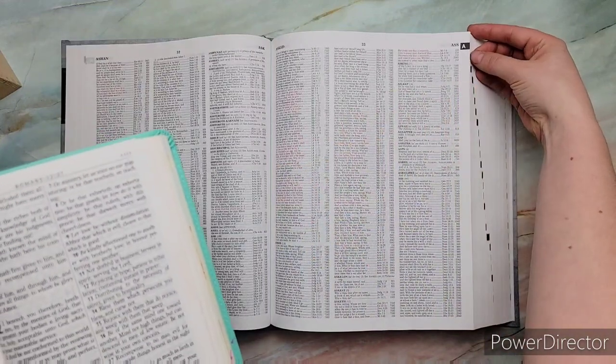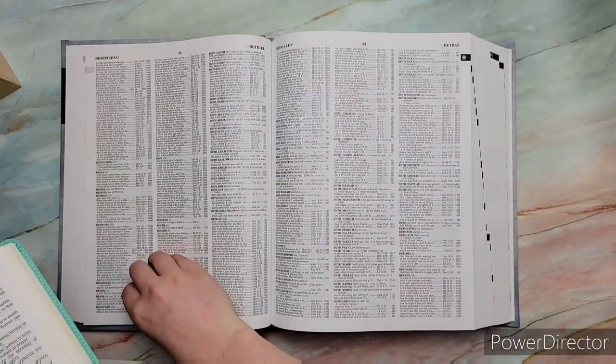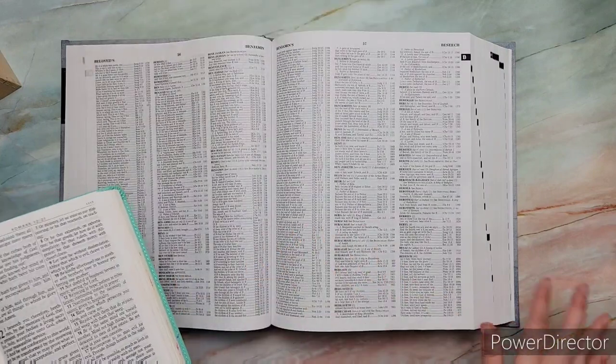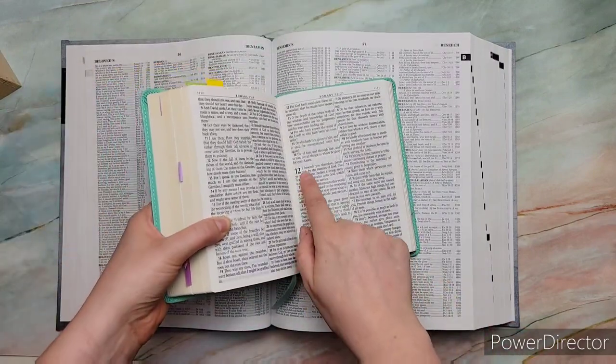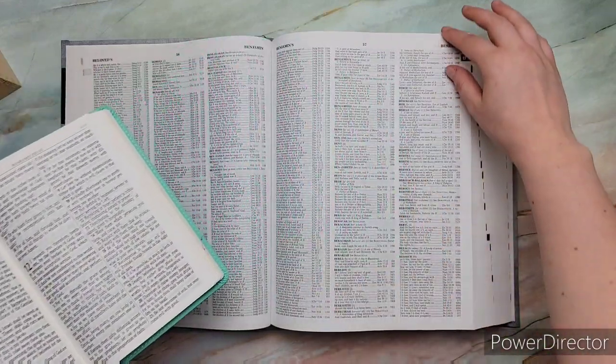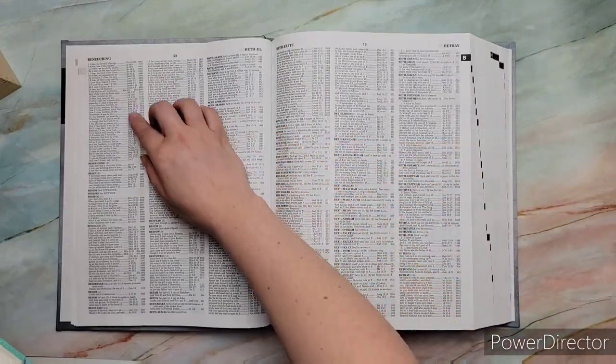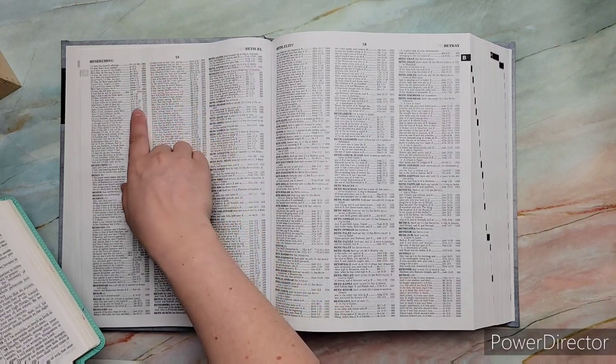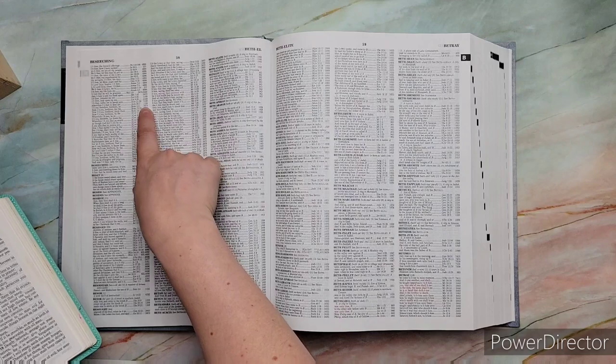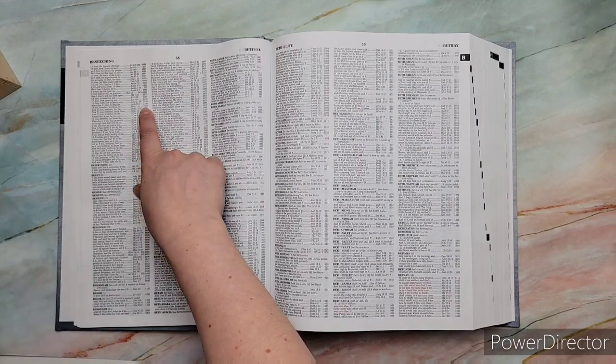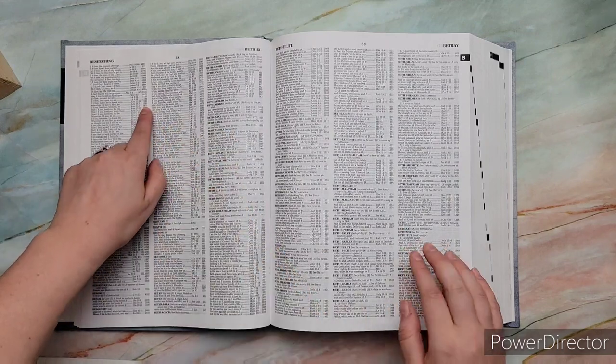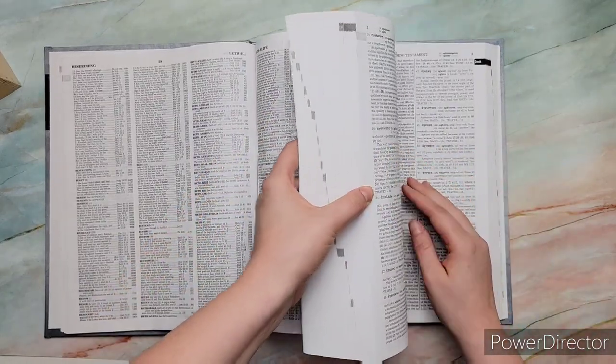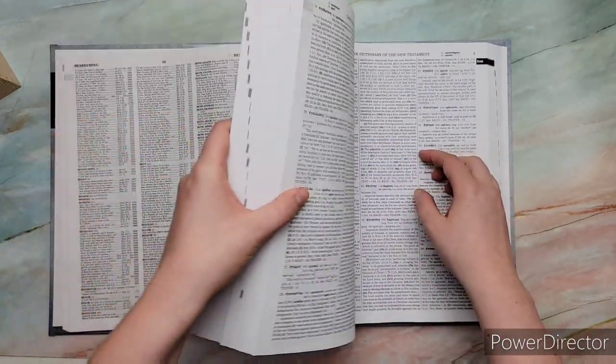Once you do that, you go to the right of it and it tells you where it's located. So these first ones are in the Old Testament, so you flip to the next page and you go down until you find the one that's in Romans 12. And then you look next to that, and that is the Strong's number. Since we are in the Greek, which is the New Testament, we're going to go look for that number in the Greek section.